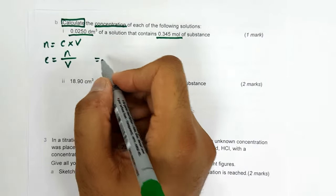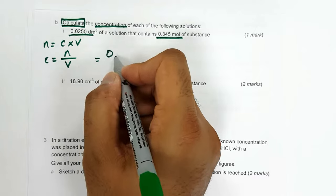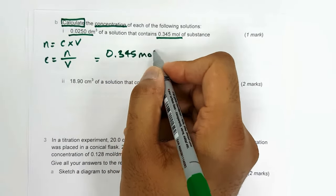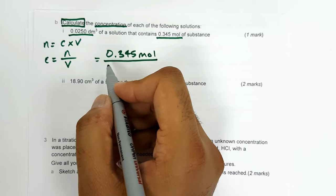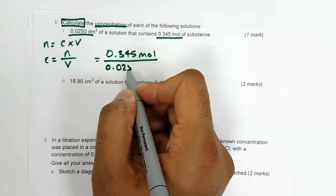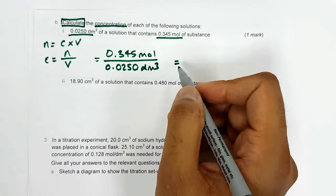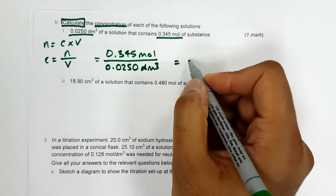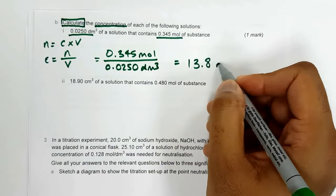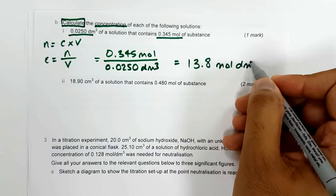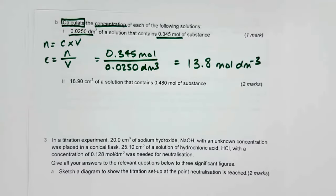Plug in the values: 0.345 moles divided by 0.0250 dm cubed, and we get the answer of 13.8 moles per dm cubed. Nice straightforward question, worth one mark.